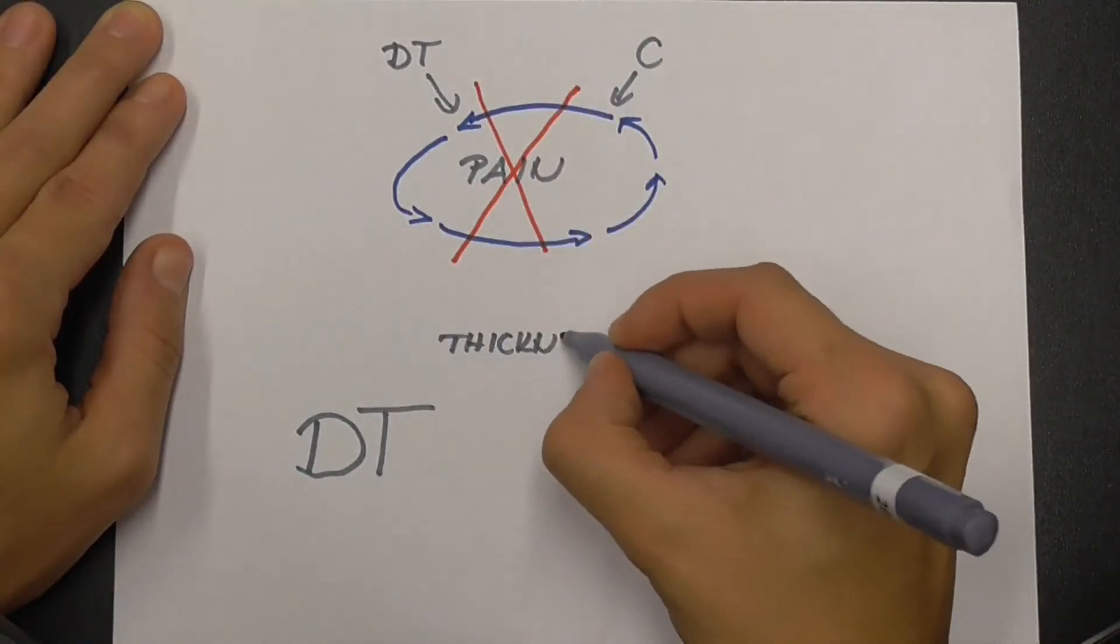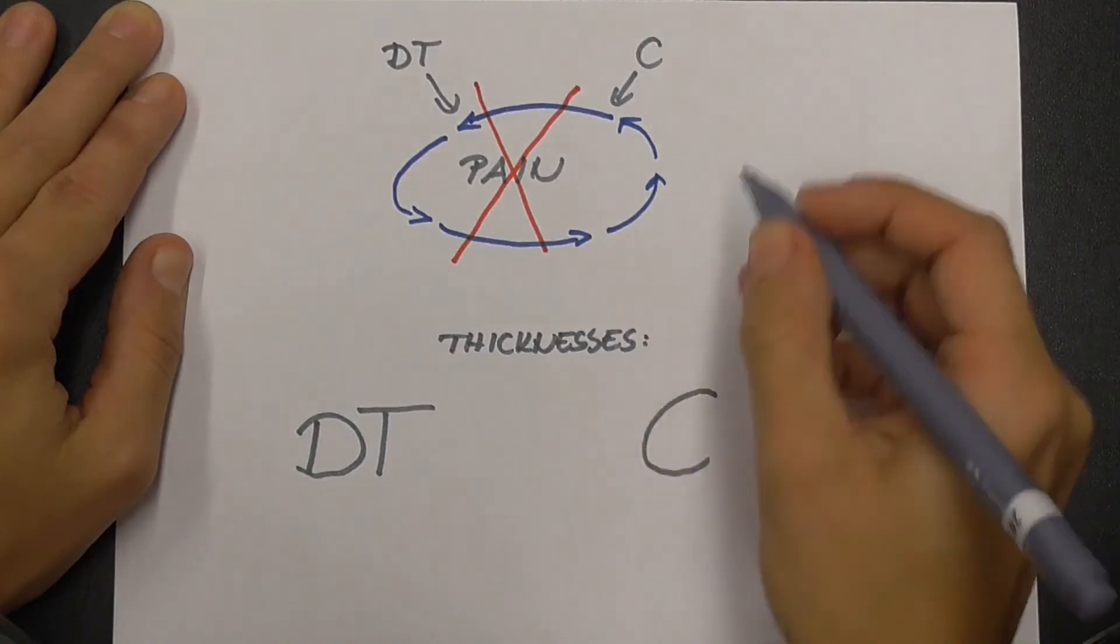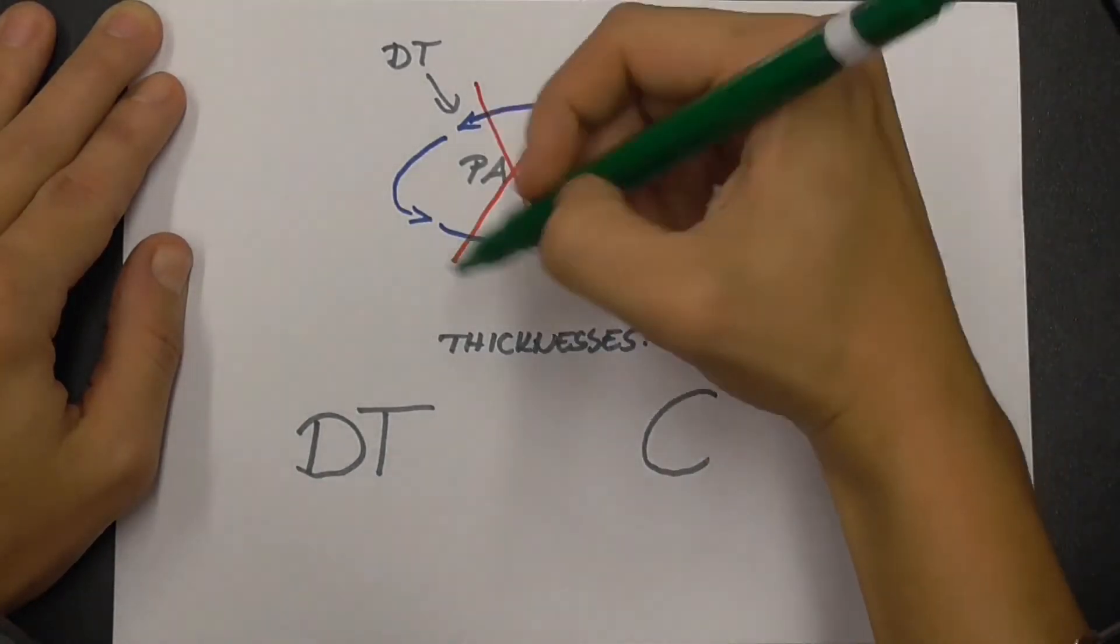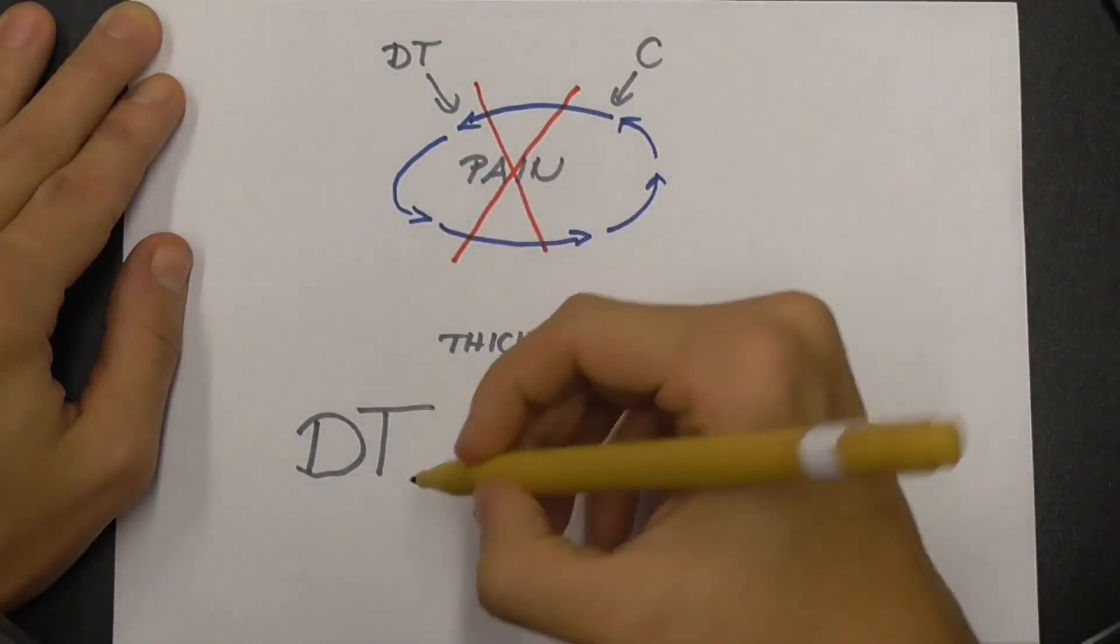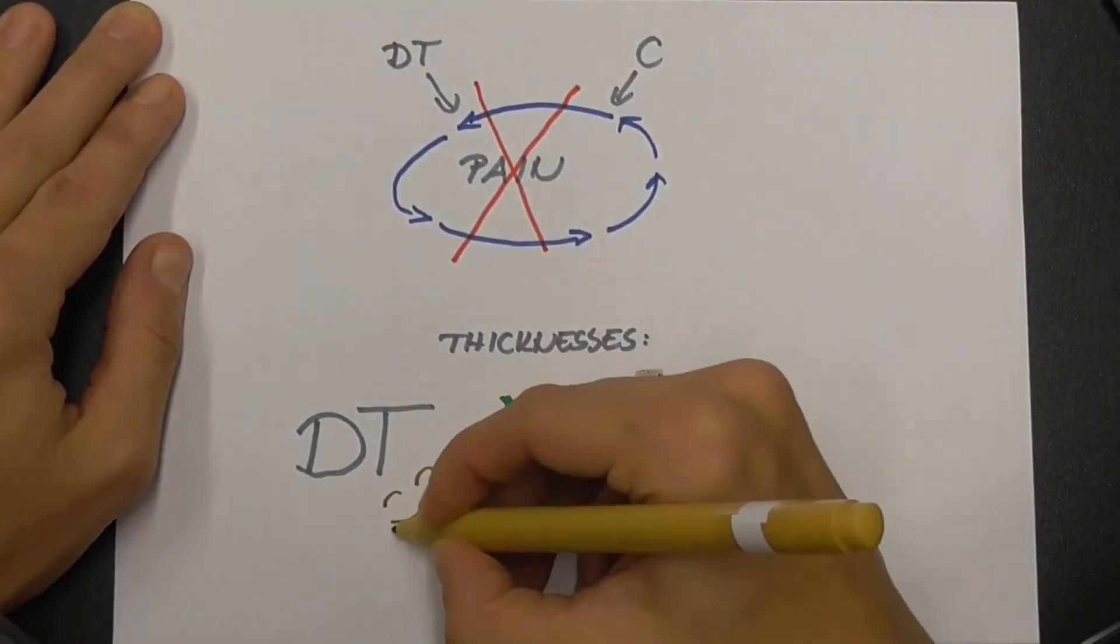The differences between the groups in the change of the thickness of the stabilizer muscles indicate that the additional diaphragm training has an extra advantage compared to a conventional complex training program alone.